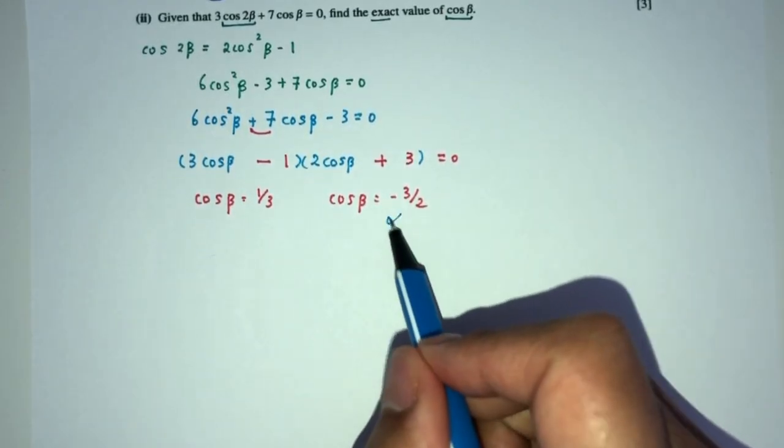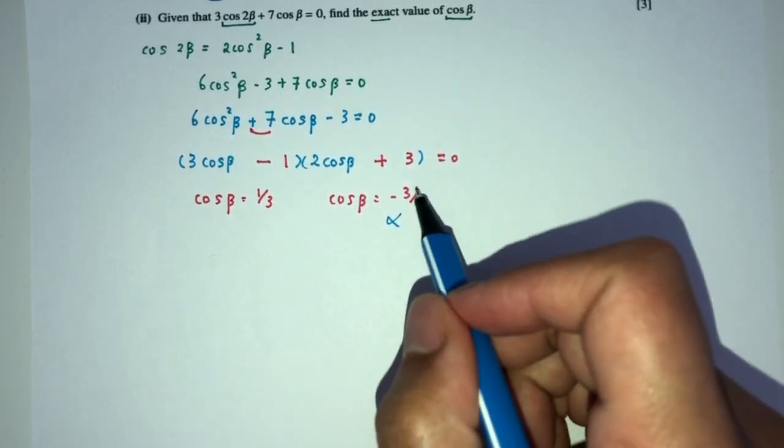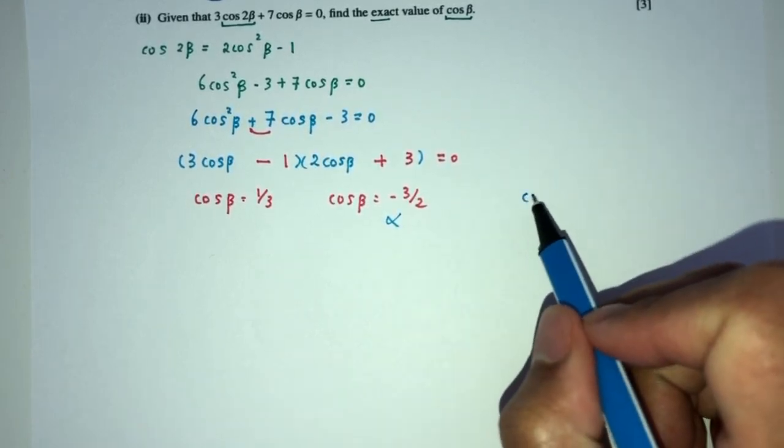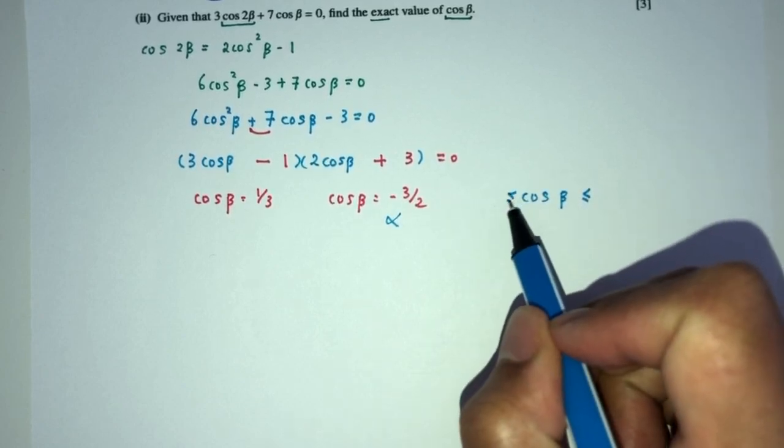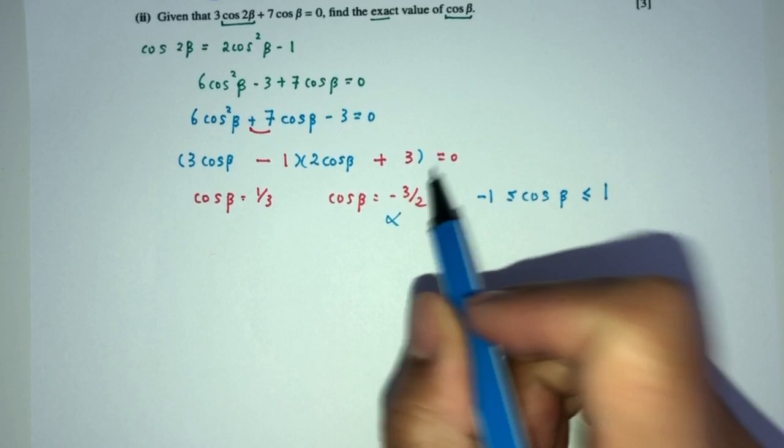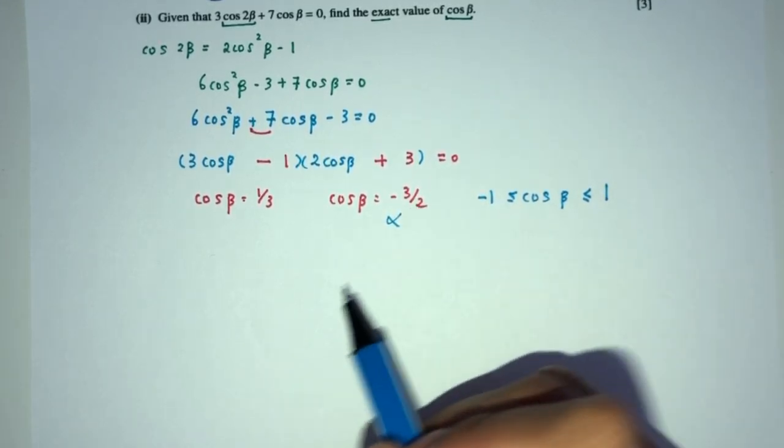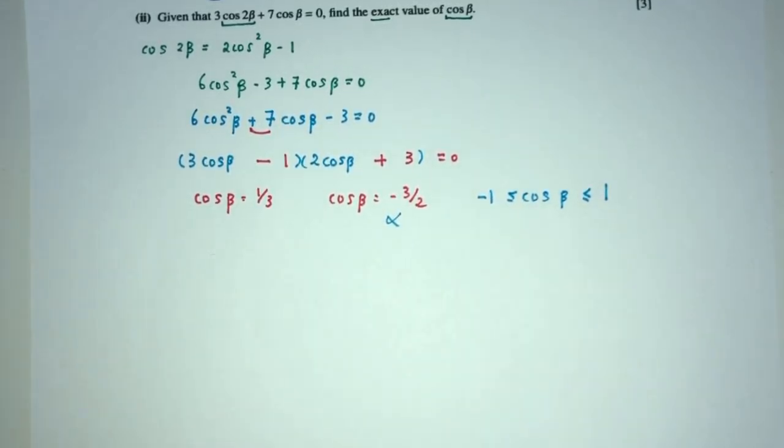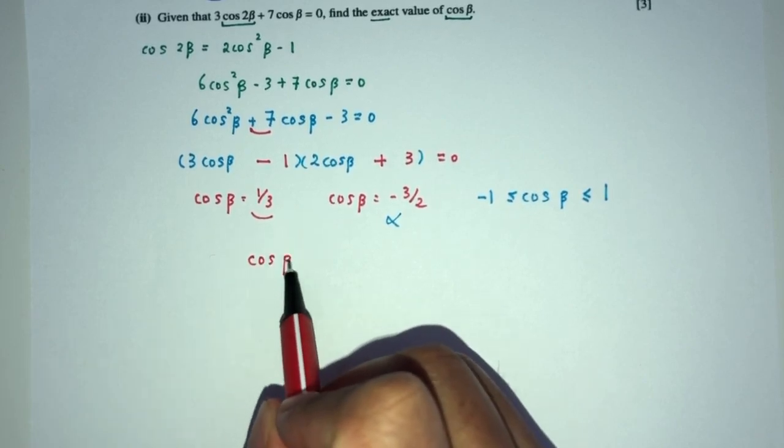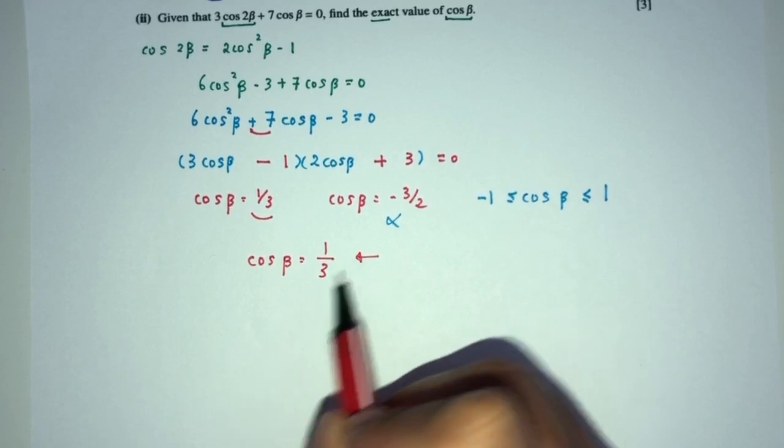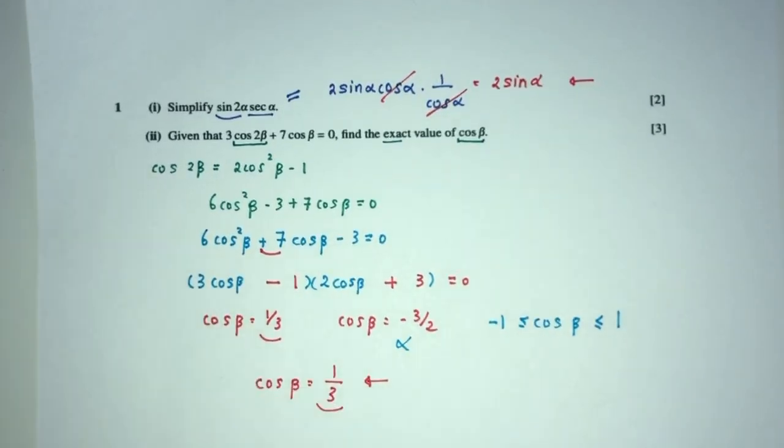Now obviously this is not possible because the value is more than -1, because we know that cos of any angle β has to be between the values of -1 and 1. This is too much, so you will not be eligible. In that case, we have only this one. So cos of β will be the value of 1/3 as exact value. This is your question number 1.